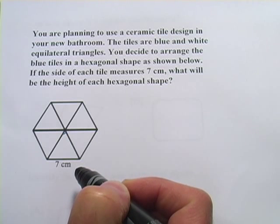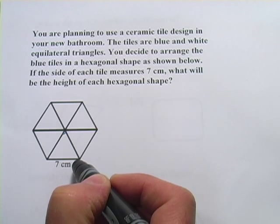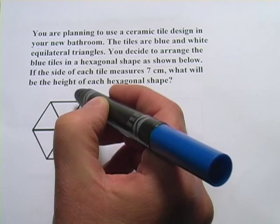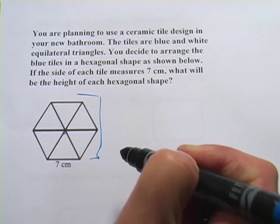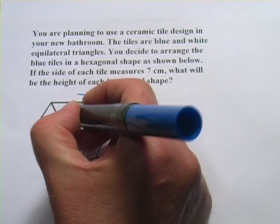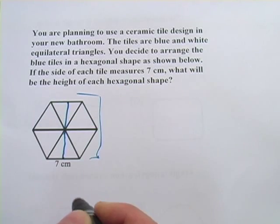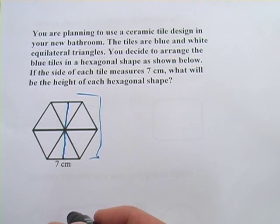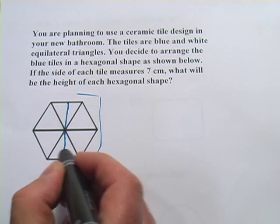If the side of each tile measures 7 centimeters, what will be the height of each hexagonal shape? So the height, they want to find this distance from here to here. So if I draw a line like this straight down the center, that would be the height.